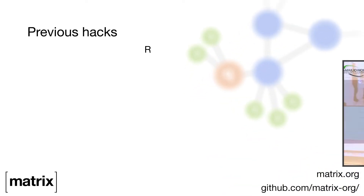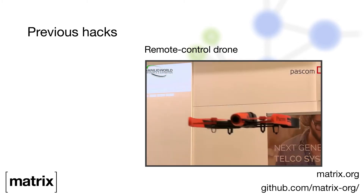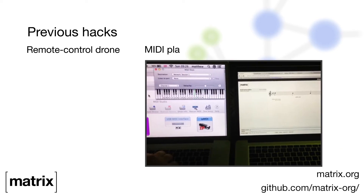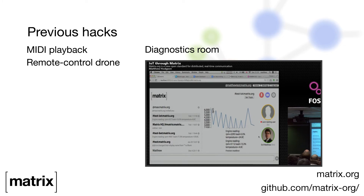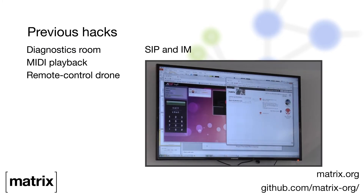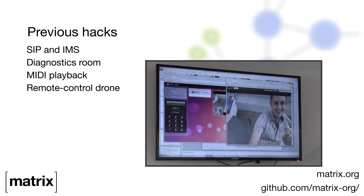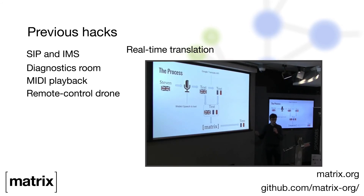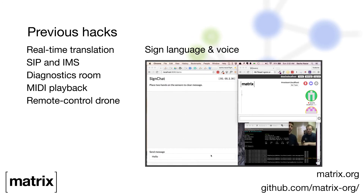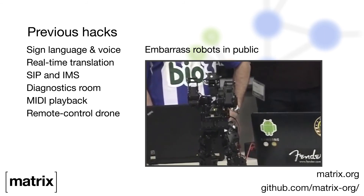Matrix can also be used for more than human communication. We've controlled a drone remotely by sending commands via Matrix, sent MIDI data to enable remote playback, and sent sensor information from a car to a real-time diagnostics room. At a previous hackathon, developers connected Matrix to existing services such as SIP and IMS, and another team created a real-time translation tool for messages sent via Matrix. Other hacks include issuing commands by sign language or voice, and controlling robot movements via Matrix — which included making a robot dance the Macarena.